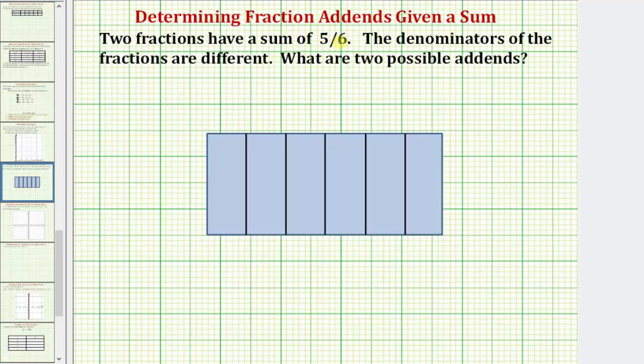Let's begin by modeling five-sixths, where if we let the rectangle be equal to one whole, we partition the rectangle into six equal pieces.